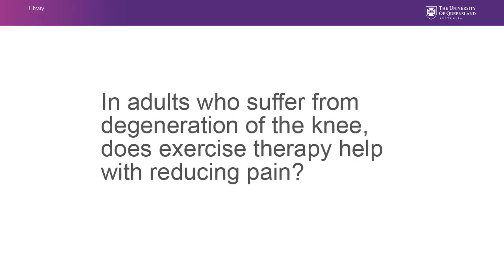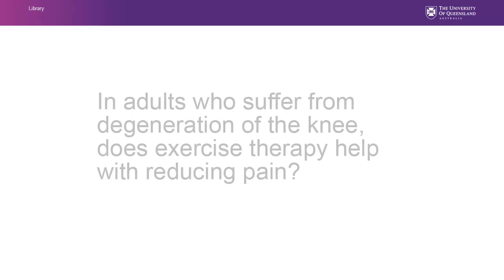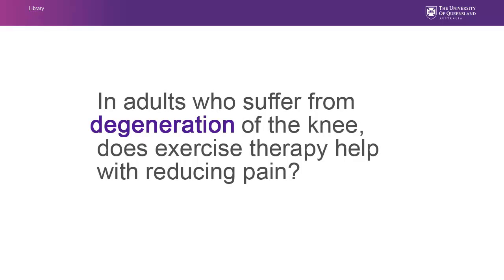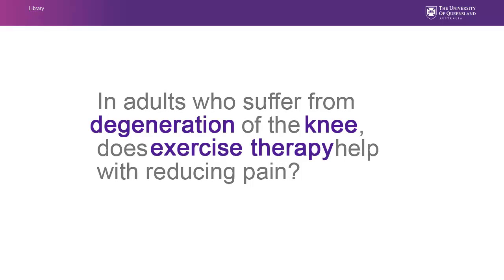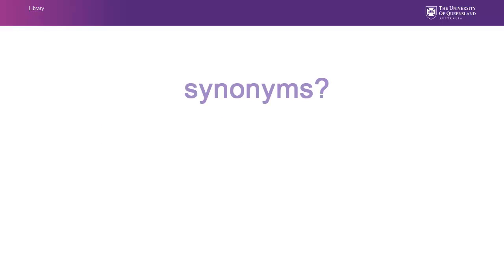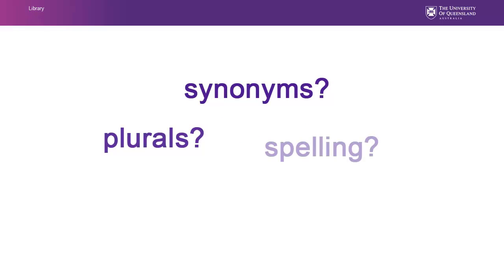Our clinical question becomes: in adults who suffer from degeneration of the knee, does exercise therapy help with reducing pain? We can now move to Step 2, where we identify the key concepts in our clinical question to formulate our search strategy. The keywords are: degeneration, knee, exercise therapy. Remember to include synonyms, plurals, and alternative spellings, and consider different terminology used in different areas.